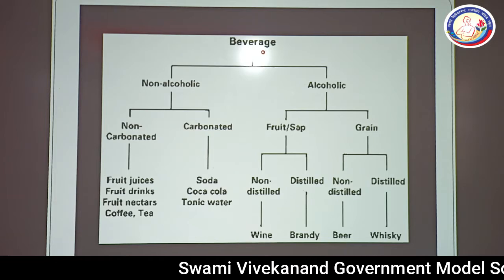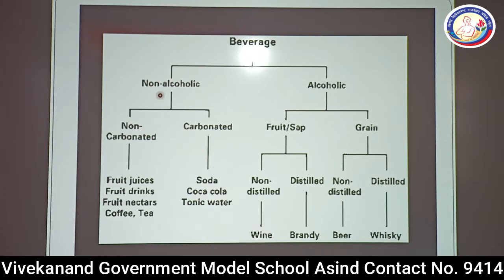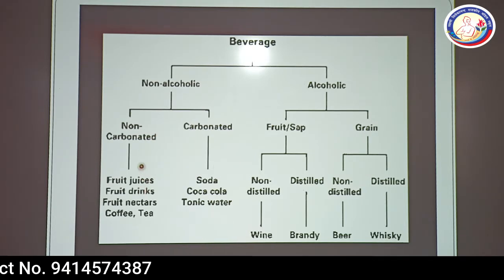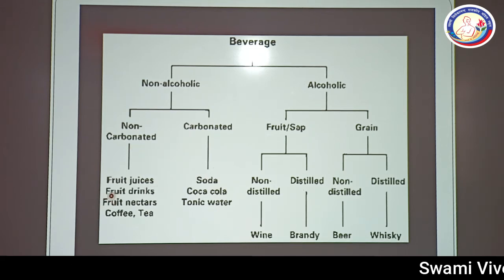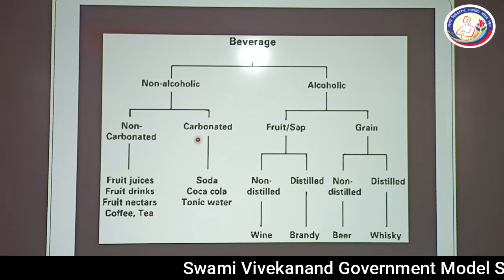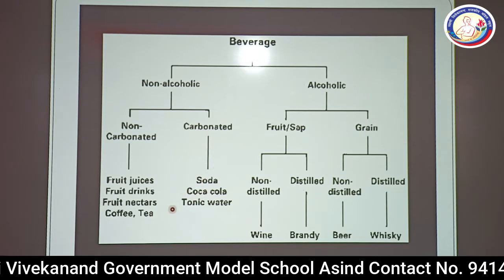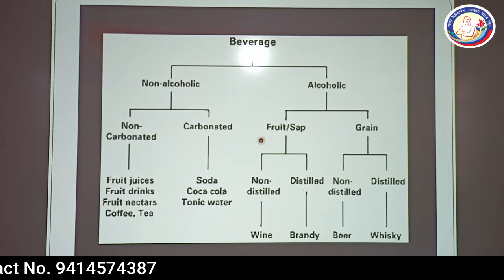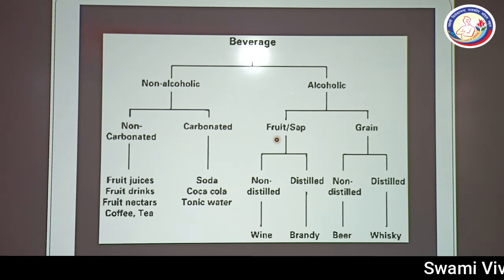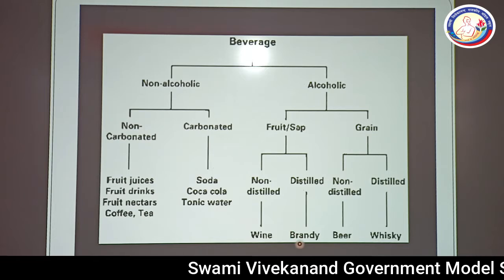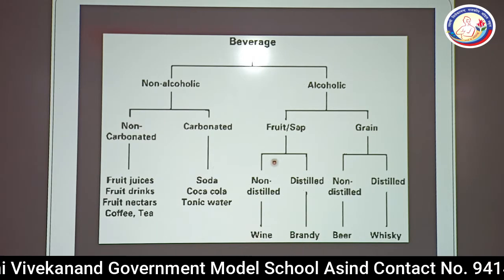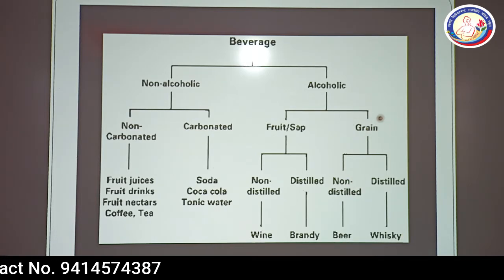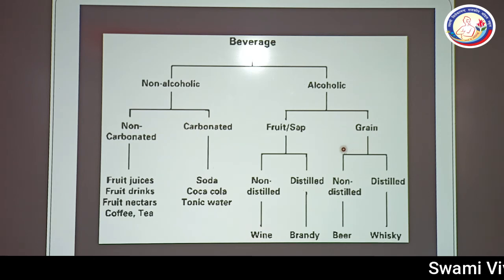Beverages are subdivided into non-alcoholic and alcoholic. Non-alcoholic beverages include non-carbonated drinks (fruit juices, fruit drinks, nectar, coffee, tea) and carbonated drinks (soda, Coca-Cola, Pepsi, Limca, Miranda, tonic water). Alcoholic drinks from fruit (non-distilled: wine; distilled: brandy) or from grains like barley and maize (beer and whiskey).